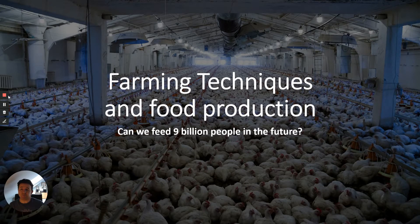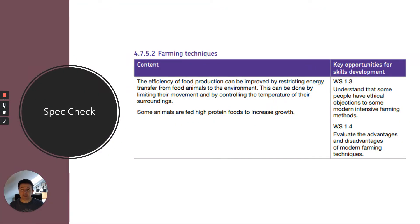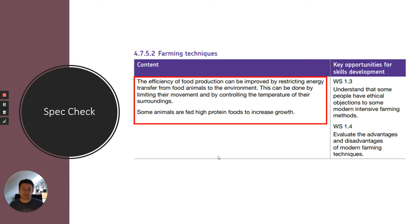Let's do a quick spec check. Related to farming techniques, the first thing is about the efficiency of food production — about restricting energy transfer. This again relates to earlier work on energy transfers and transfer of biomass, in terms of restricting that transfer so that you get more biomass of livestock.